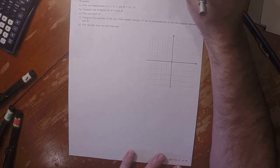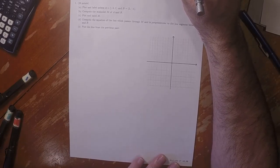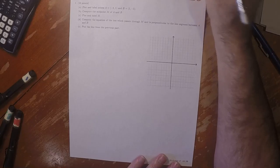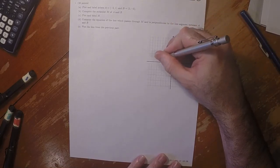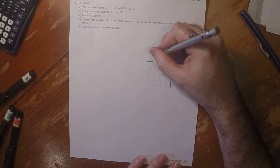This is the solution to written homework 29. Okay, so negative 5, 1. So 1, 2, 3, 4, 5, 1. So that's point A.